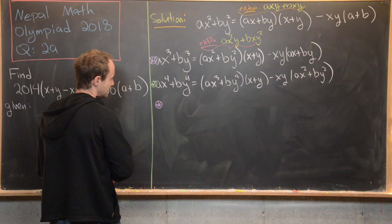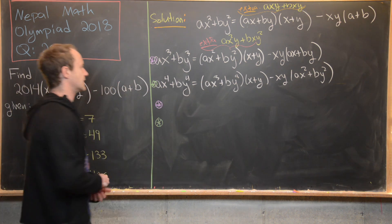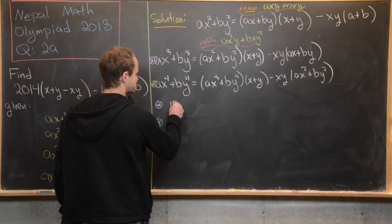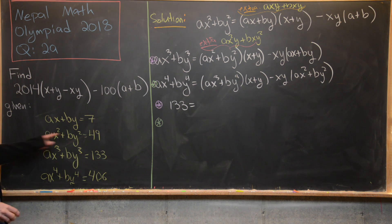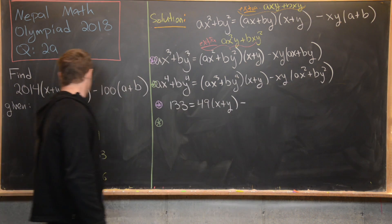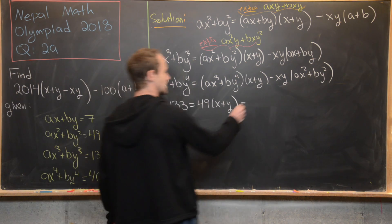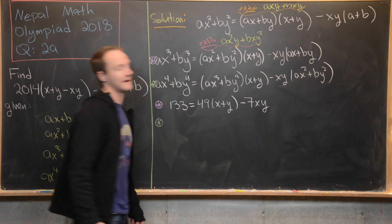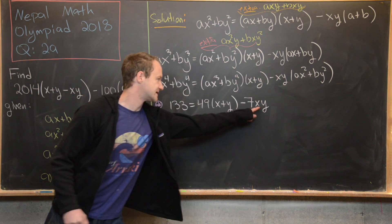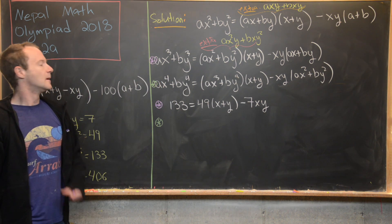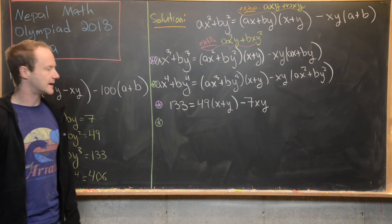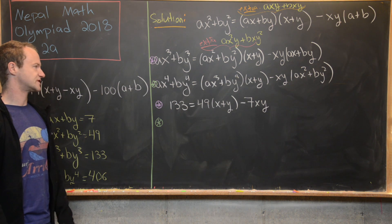Writing the third-equation recurrence with known values gives: 133 = 49(x + y) - 7·xy. Writing the fourth-equation recurrence gives: 406 = 133(x + y) - 49·xy. Importantly, these are linear equations in the variables x + y and xy — the grouped quantities we were interested in — which is great news.